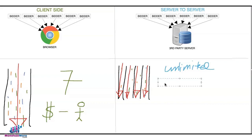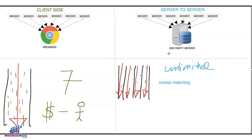But let's discuss some of the drawbacks if you're running server-to-server. Number one is cookie matching. In the client side, the cookies are stored in the browser, which are then sent directly to the programmatic bidders. In S2S, the auction is not in a browser but in a third-party server, so it makes it difficult to sync the user identity with these programmatic bidders.